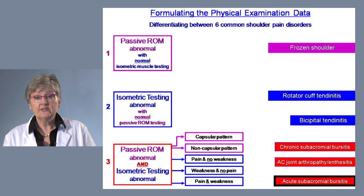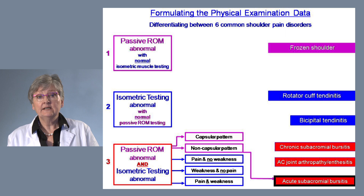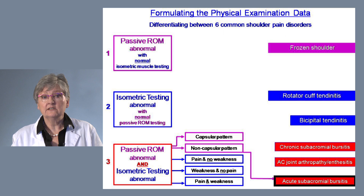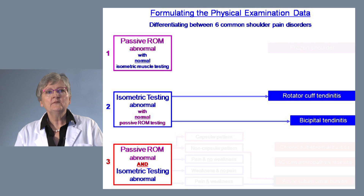When it comes to acute subacromial bursitis, this will again be a non-capsular restriction of motion. In terms of the isometric muscle testing, there will be pain and weakness.